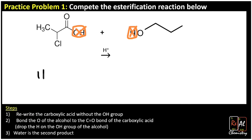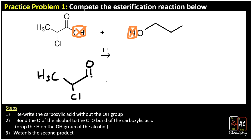So we have H3C going down to a chlorine and then up to a double-bonded oxygen, and we would have the OH but we're going to get rid of that — it's going to go to water. Then it says bond the O of the alcohol to the carboxylic acid, so we go straight to an O, which we need because that's part of what an ester is. Then we finish drawing our alcohol as one, two, three carbons. And then the other product is water.